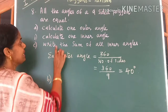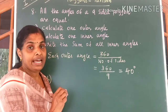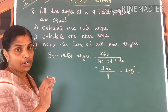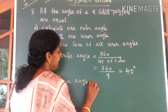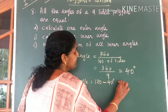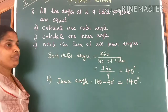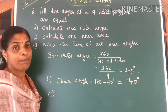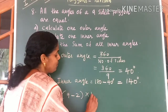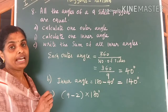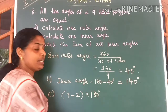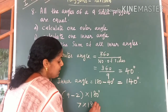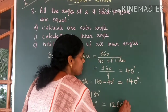Come to the second question: calculate one inner angle. We know inner angle plus outer angle at each vertex of a polygon gives 180 degrees. So the inner angle is equal to 180 degrees minus 40 degrees, which gives you 140 degrees. For the third part, the sum of inner angles is equal to (9 minus 2) into 180 degrees, using the formula (N minus 2) into 180. That gives 7 into 180 degrees, which is equal to 1260 degrees.